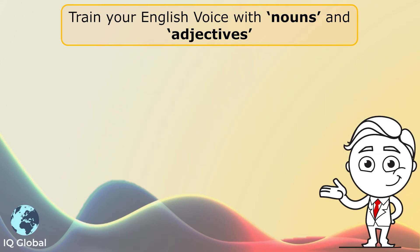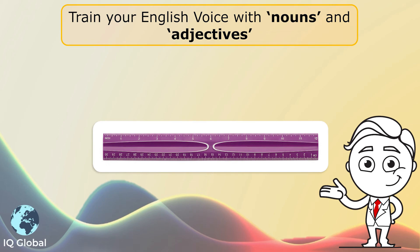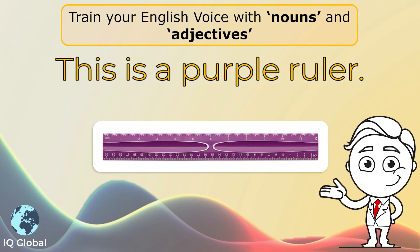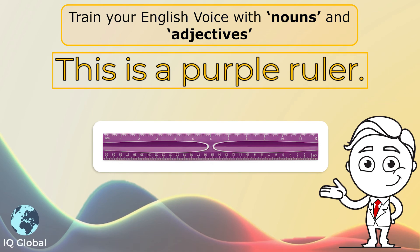Let's have a look at some more examples. Here, I have a ruler. Ruler is the noun because it names this thing. If I said, this is a purple ruler, the word purple describes this ruler — it describes the noun. So purple is the adjective. This is a purple ruler.